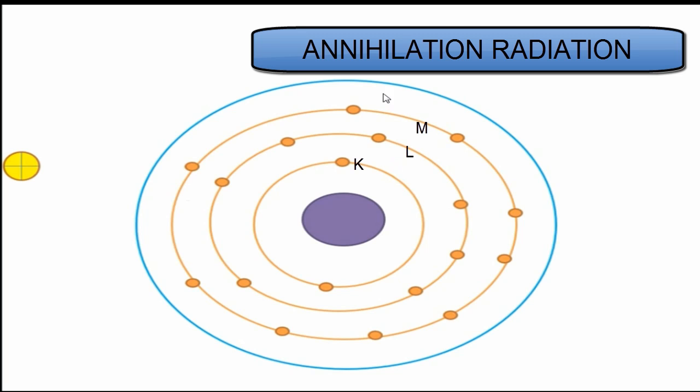This is the K shell, L shell, and M shell, and the outer one represents my atom. The yellow one here represents the positron. When the positron comes to the end of its range, it will move very slowly.